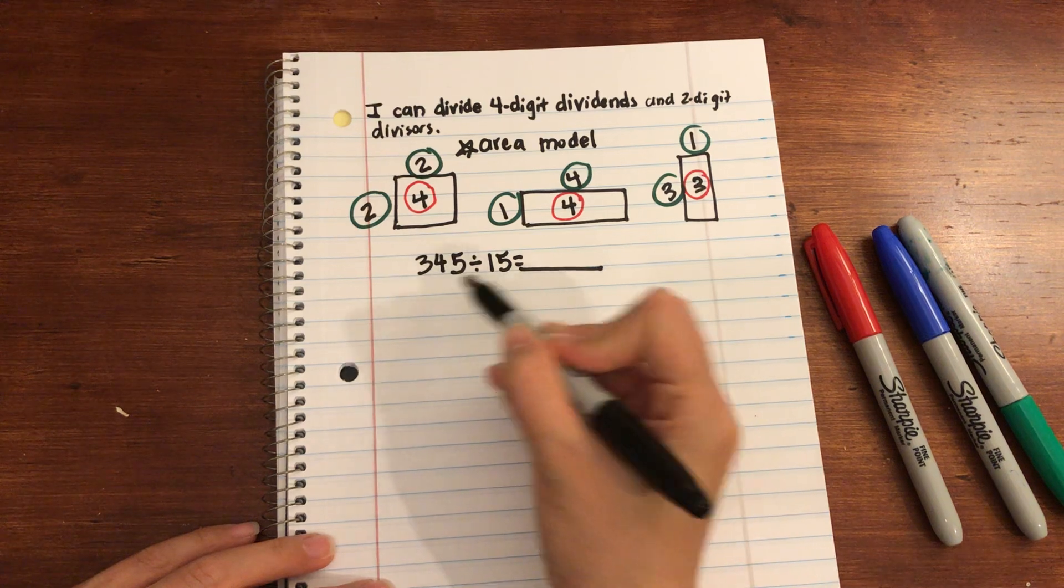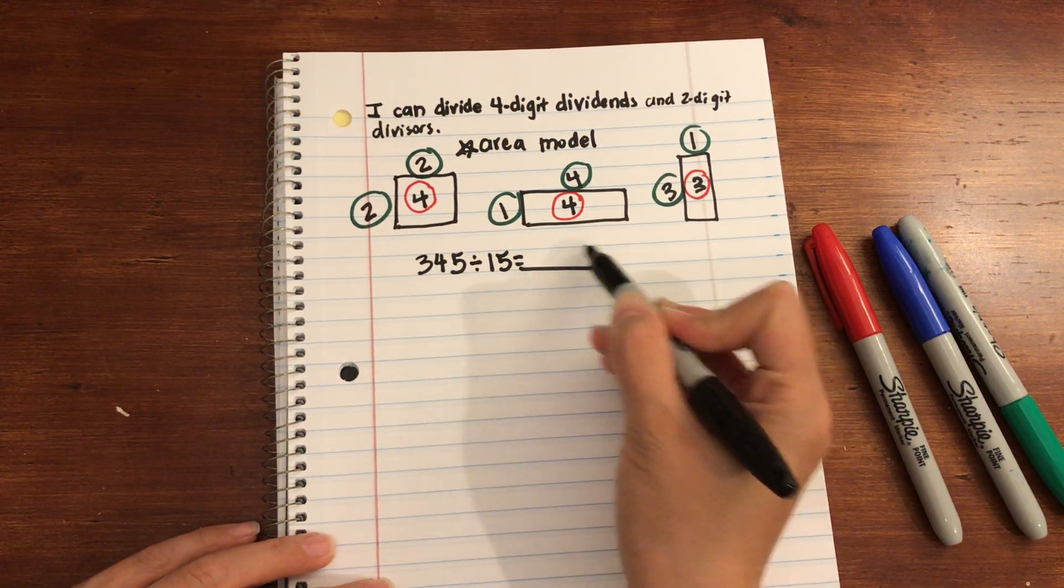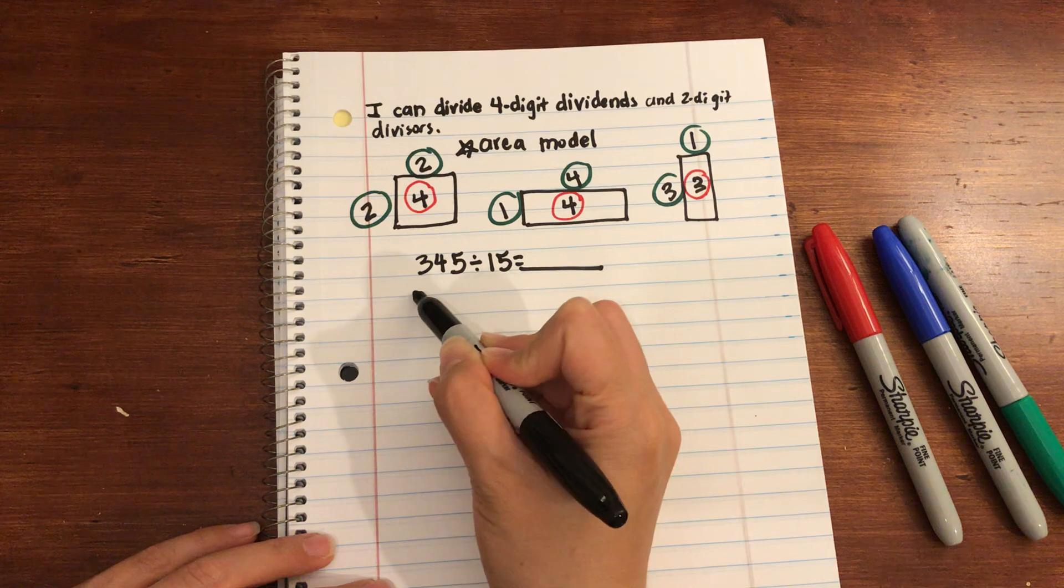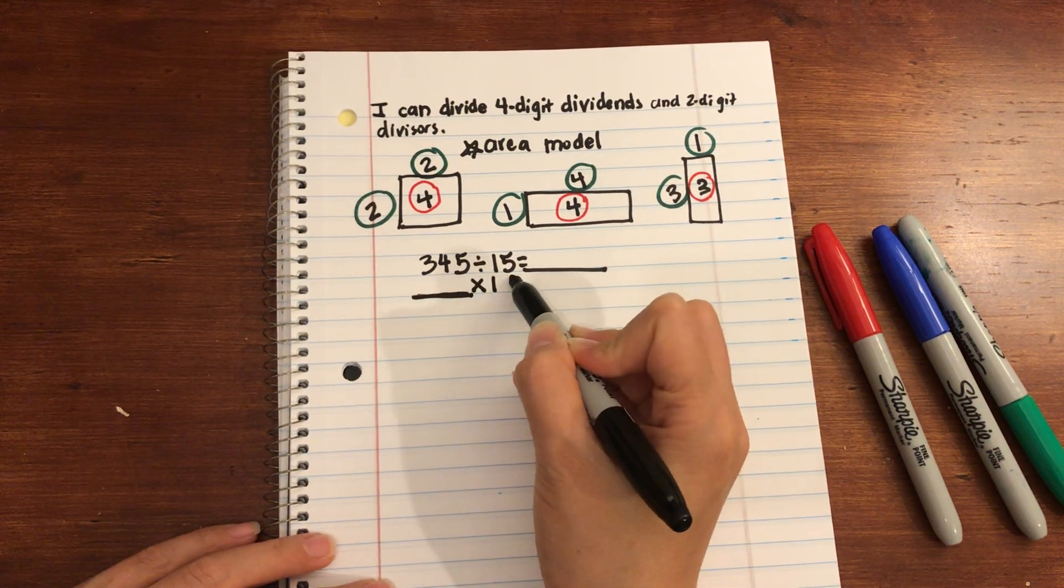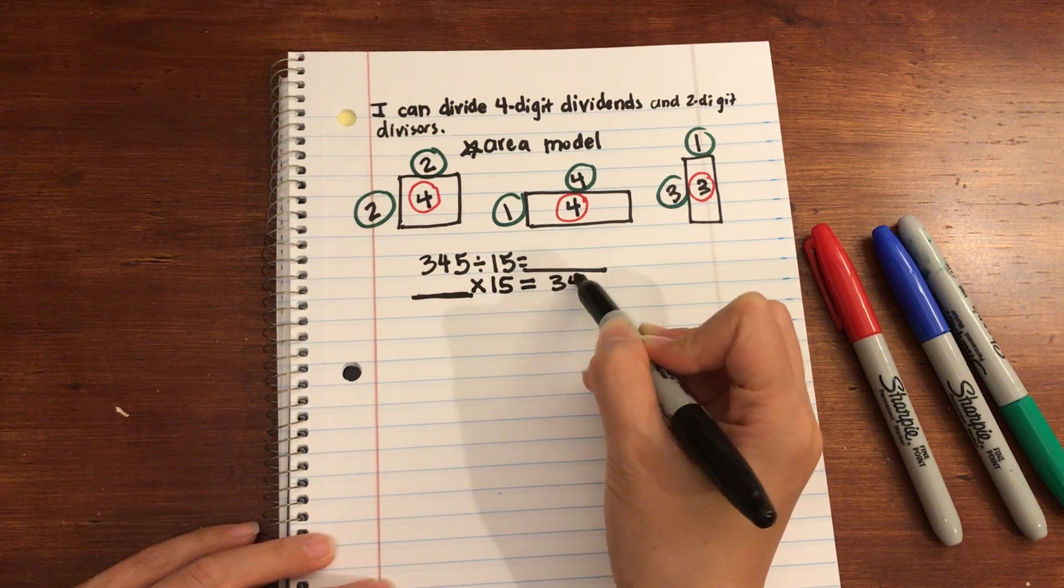But we can rewrite this as a multiplication equation. So we're going to take the missing quotient as our missing factor times the divisor 15 is equal to 345.